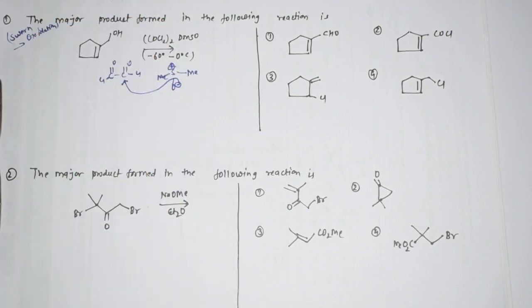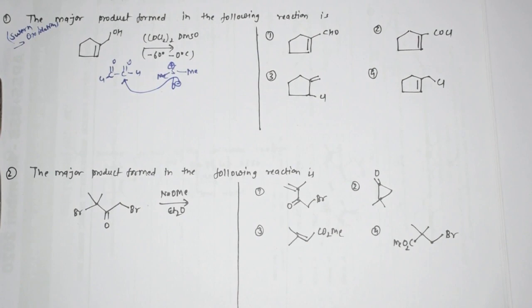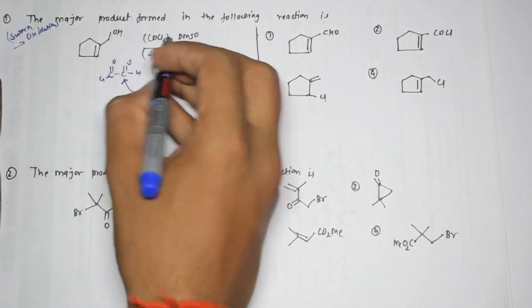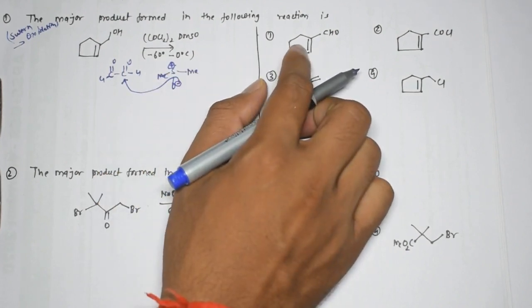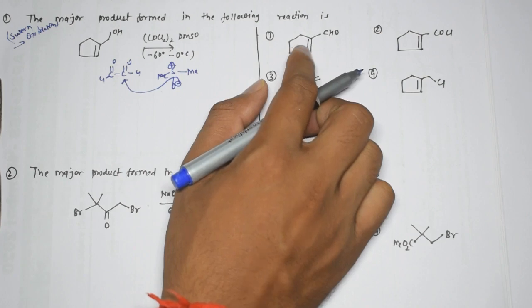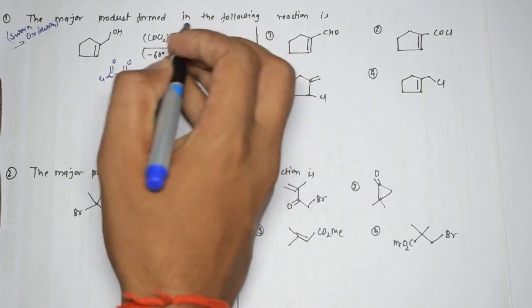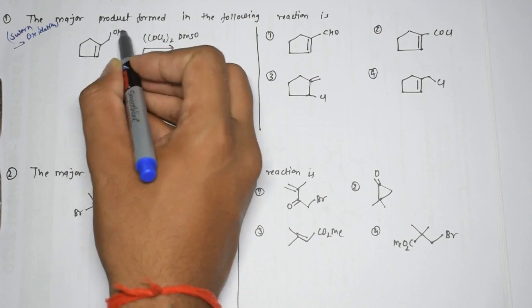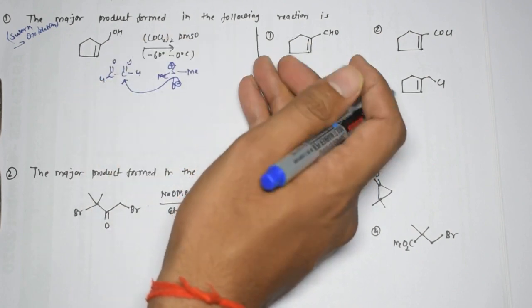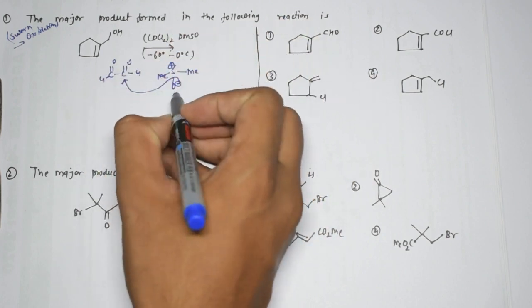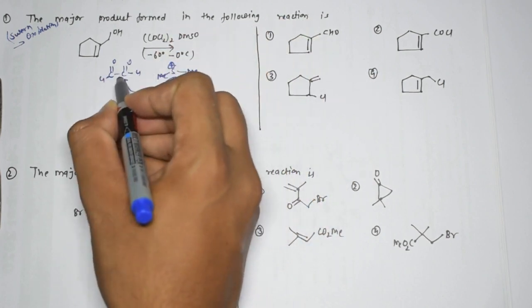In this case, one key observation is that we are not going to use any base. Without a base, our product may be affected. Without looking at the options or the mechanism, you might say the first option is correct, since in a normal Swern oxidation the alcohol gets converted to an aldehyde or ketone. However, the mechanism here will be a little different.